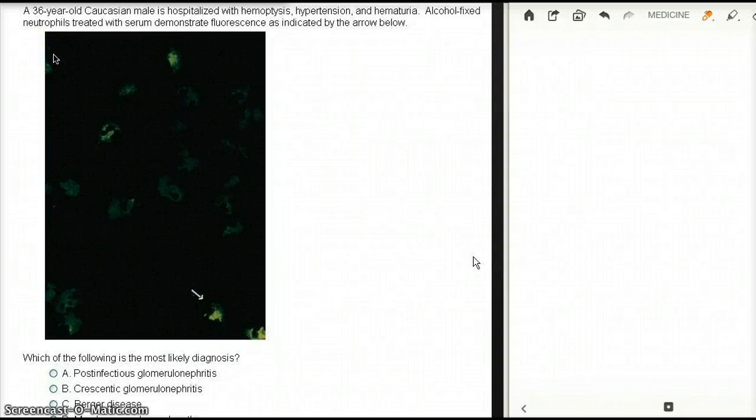This question deals with a 36-year-old Caucasian male hospitalized with hemoptysis and hematuria. Alcohol-fixed neutrophils treated with serum demonstrate fluorescence as indicated by the arrow below. So these are neutrophils, alcohol-fixed neutrophils treated with serum, demonstrating fluorescence as indicated by the arrow below.